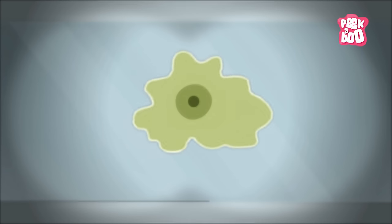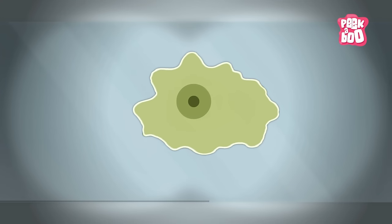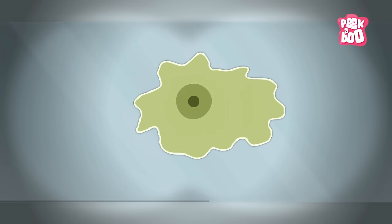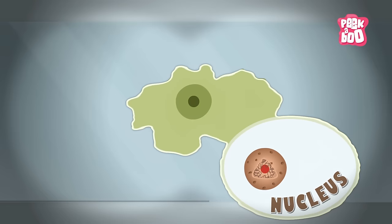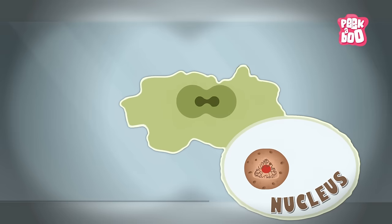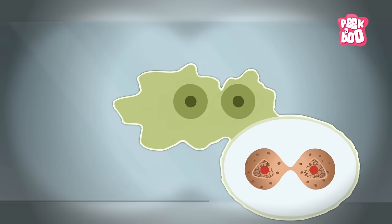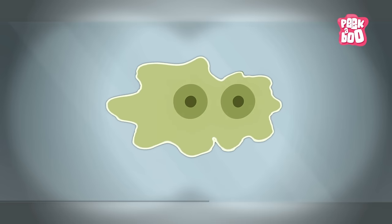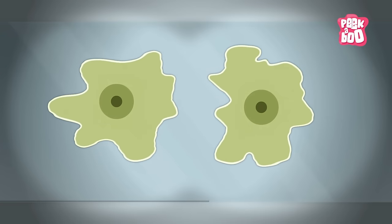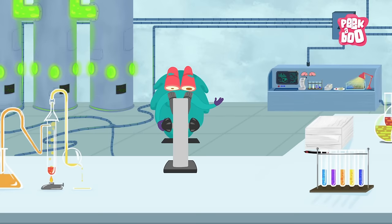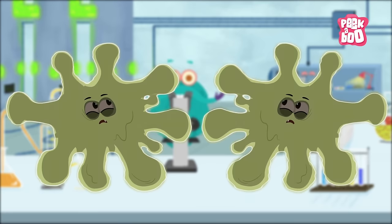As we all know, amoebas are single celled organisms. And they reproduce when the nucleus inside the cell divides itself into two equal halves. And later, these two nuclei split into individual cells, resulting into two separate but genetically identical amoebas.